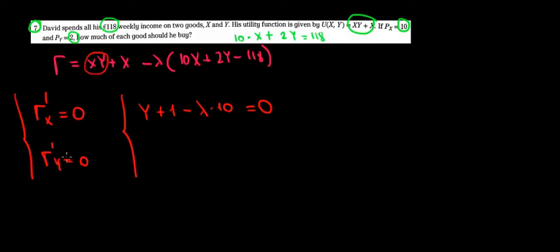We do the same over here. Derivative of the Lagrange with respect to y. From the first term, we have x times y derivative with respect to y. That's just x. x is a constant. Derivative is 0. Minus lambda times this is a constant. Derivative is 0. And here we have 2y derivative with respect to y. It's just 2. So we have lambda times 2. And 118 is just a constant. Derivative is 0.